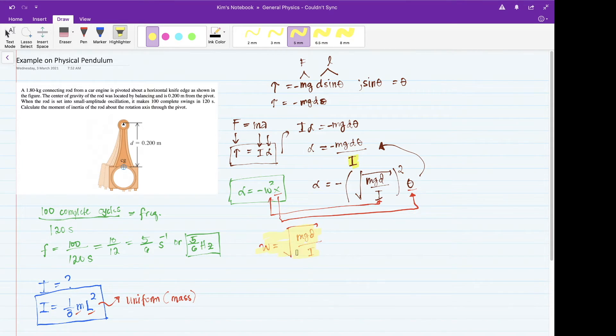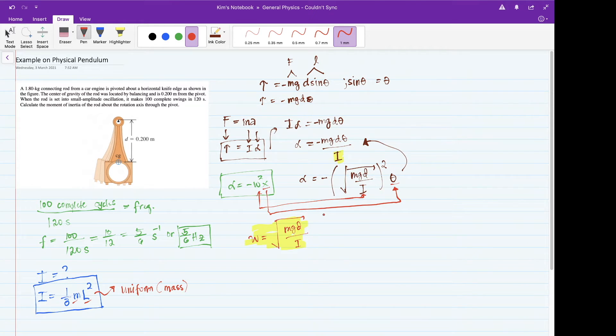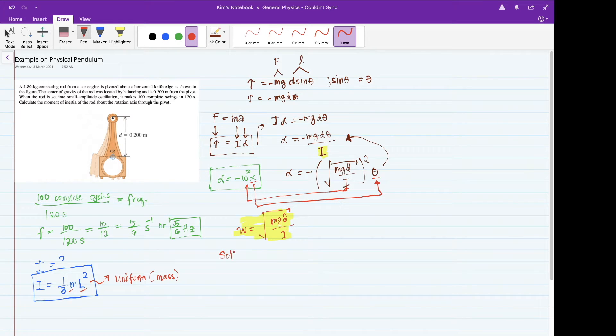Since the problem asks us to find the moment of inertia I, what we are going to do is we need to find an equation that we can manipulate. Since we know frequency, the easiest equation we could think of is to do this one. You know that omega is just equal to 2 pi multiplied by the frequency. You know frequency, and omega, you know an expression for omega which contains I. That is significant because I is what you are looking for.